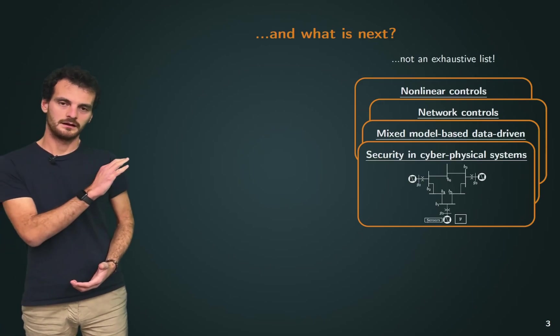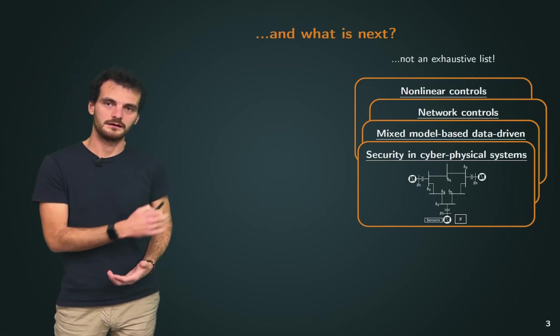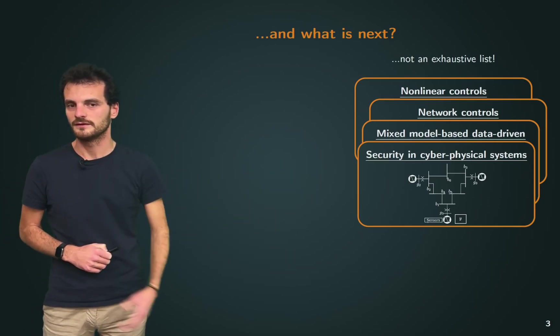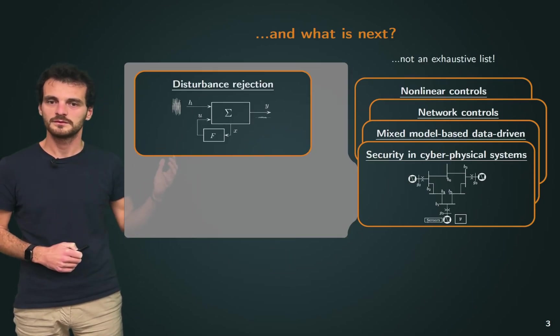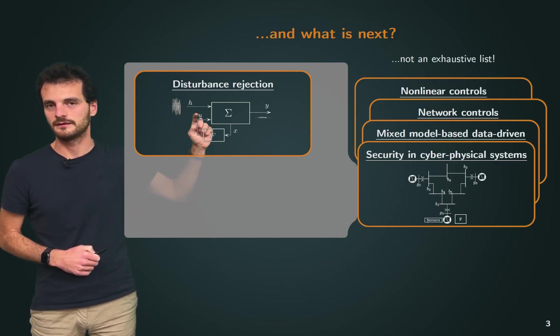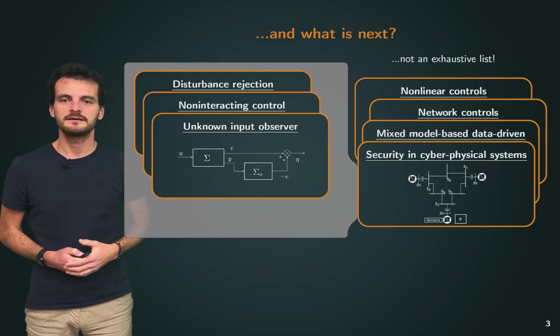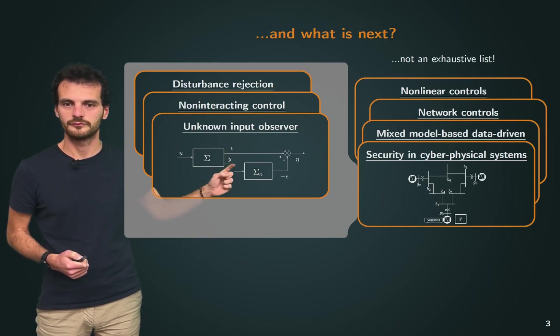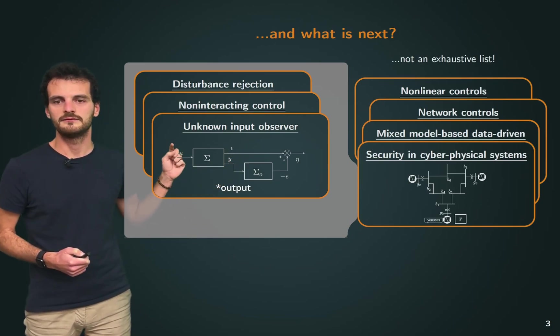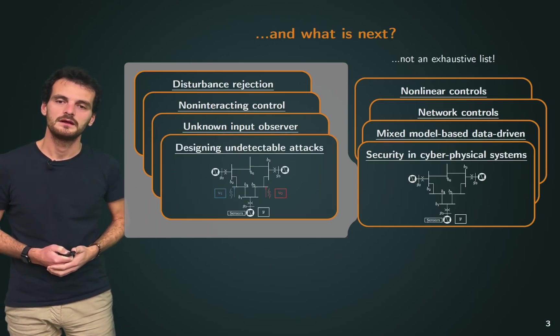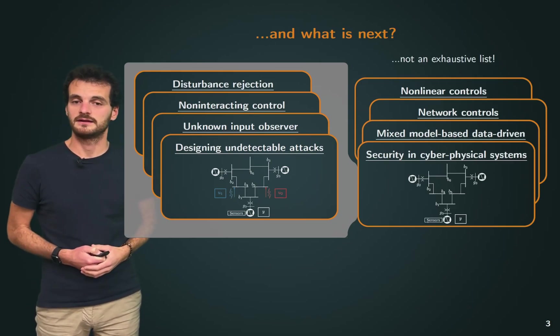There are many problems that you can see as a subset of security in cyber-physical systems. For example, disturbance rejection, where we want to minimize the influence that some inputs have on our outputs. Non-interacting control, unknown input observer, where you're trying to, from an observed input, infer which input generated that output. And also the design of undetectable attacks.